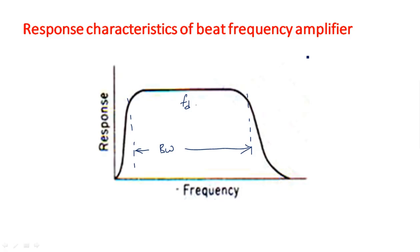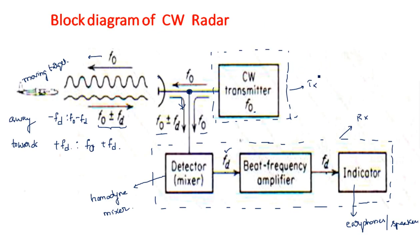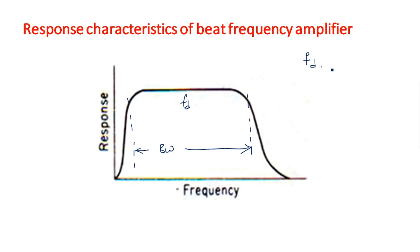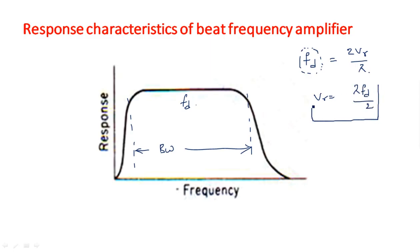From the block diagram, the parameter we have found is fd. Nowhere in the block diagram have we directly discussed velocity. With the fd obtained, we can calculate the relative velocity using the formula: vr = λfd / 2. This gives us the amount of relative velocity with which the target is moving. To summarize: CW radar is used to find velocity but not range, whereas pulse radar is used to find range but not velocity — both are opposite to each other.